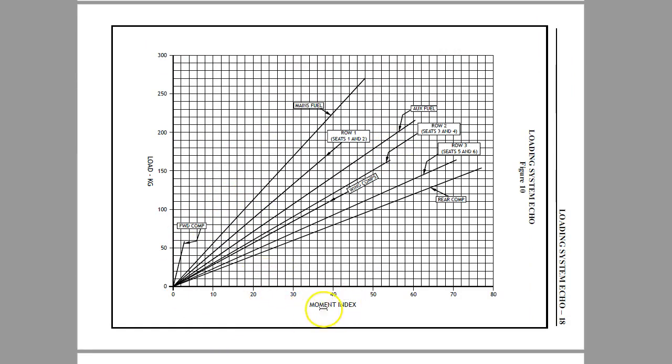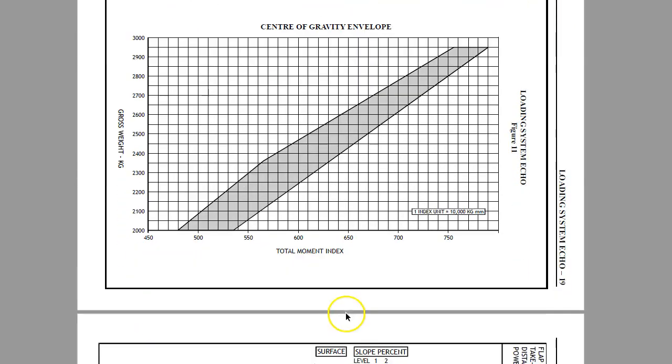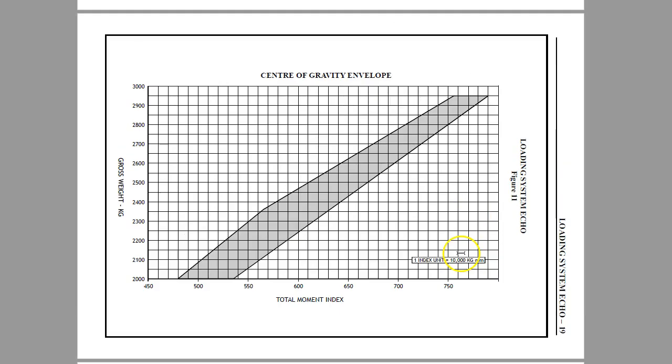Okay, so basically they talk about these index units. And what is an index unit? Well, one index unit equals 10,000 kilogram millimeters.